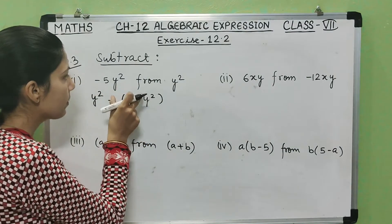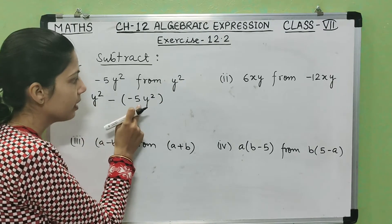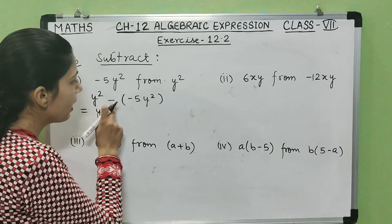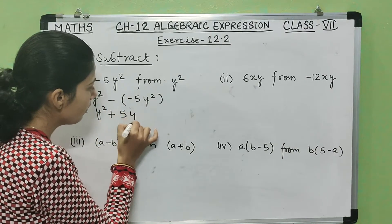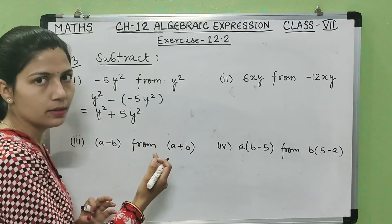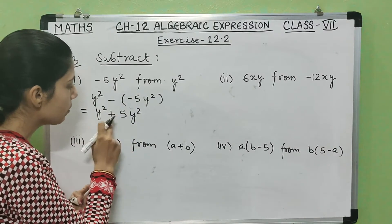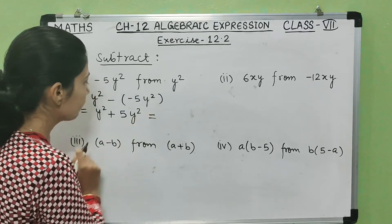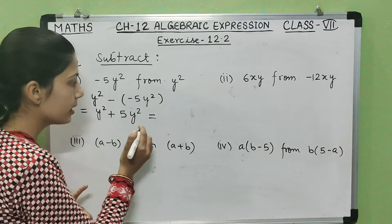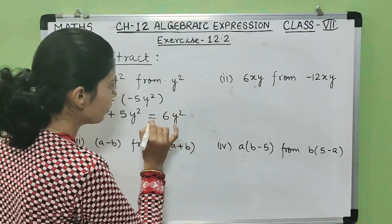We are subtracting minus 5y² from y², that is why we write y² first, then minus 5y². When we open the bracket: y² minus into minus is plus, so plus 5y². Now both are like terms — y² and y² — so they add up. The numerical coefficient gives us 6y².